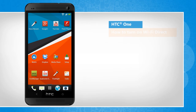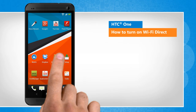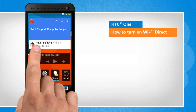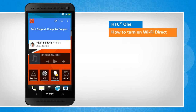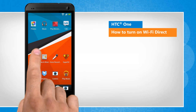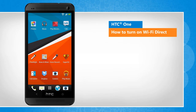Hi friends! The Wi-Fi Direct feature on your HTC One device lets you share large files with Android devices without requiring a wireless access point. Here is how you turn on Wi-Fi Direct on your HTC smartphone. You will notice a slight difference in the screen transitions than the actual device screen transitions here.